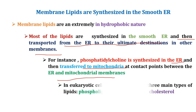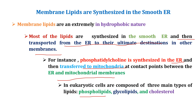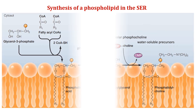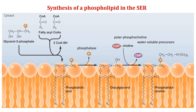As discussed in my previous video, the membranes of eukaryotic cells are composed of three main types of lipids: first is phospholipids, second is glycolipids, and third is cholesterol. That video link is also given in the description box. Next is the synthesis of phospholipids in the smooth ER.